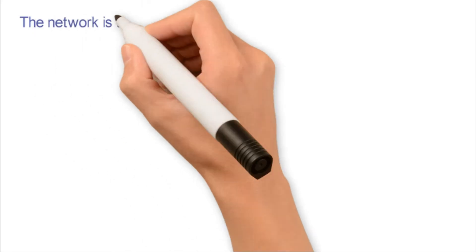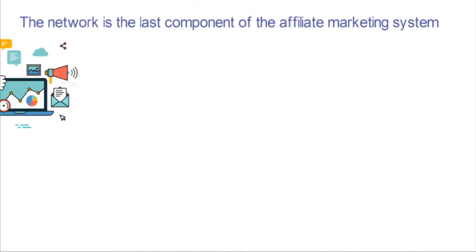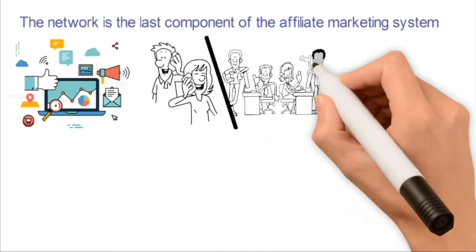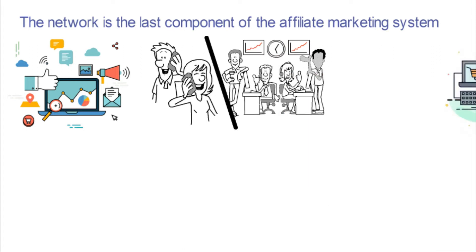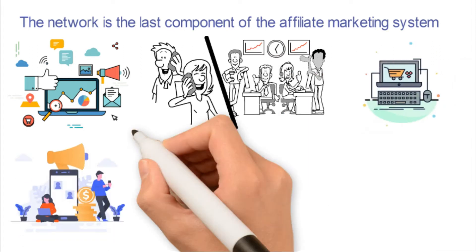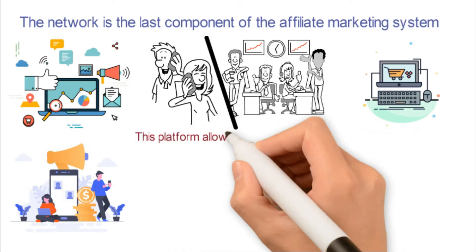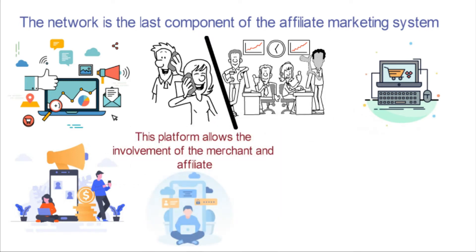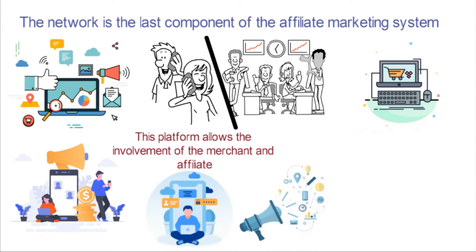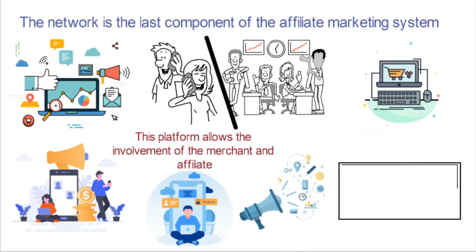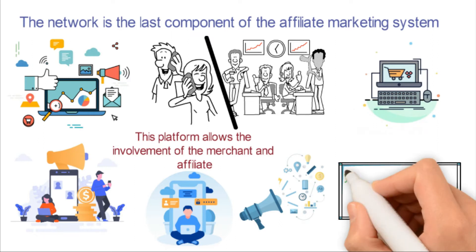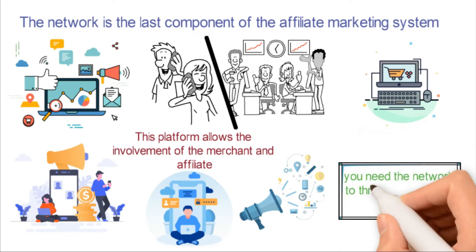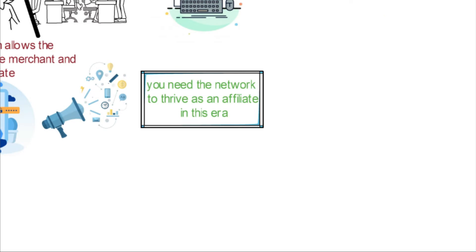The network is the last component of the affiliate marketing system. Since everything has gone digital, this network is an online platform that serves as an intermediary between a product creator and affiliates. These platforms allow the involvement of merchants and affiliates. Most times, an affiliate marketer has to join or register on a platform where he can easily promote available products and services. Therefore, you need the network to thrive as an affiliate in this era.